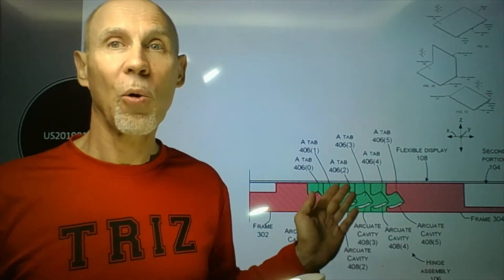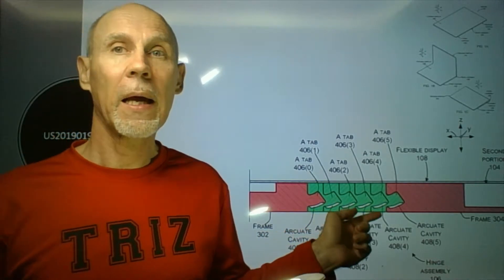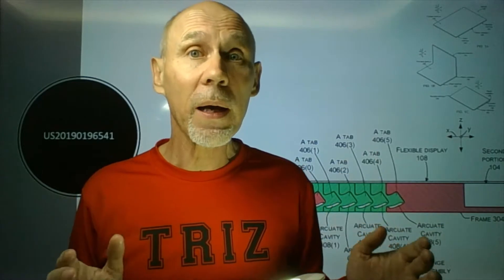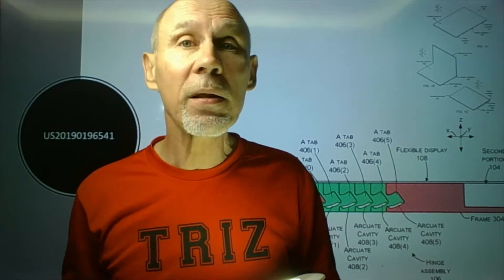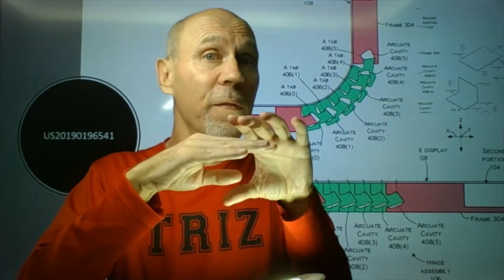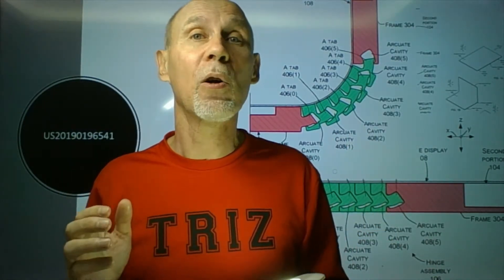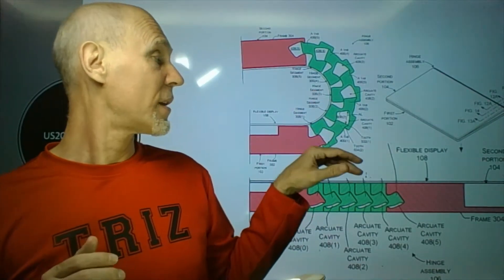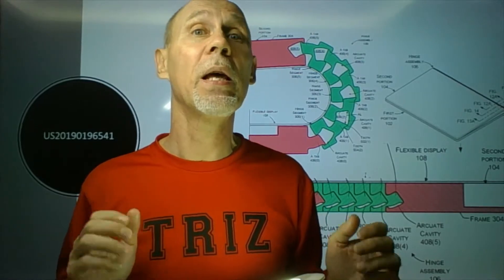The middle part consists of segments. The ends of the segments can go in and out of the cavity of the neighboring segment. In the 180-degree open position, they are fully inserted into these cavities. In the 90-degree bent position, they are half inserted and half removed. And finally, in the fully closed state, the ends of the segments are fully removed from the cavities in the neighboring segments.